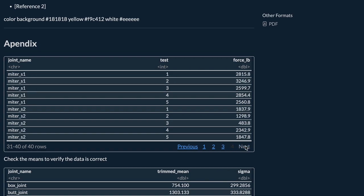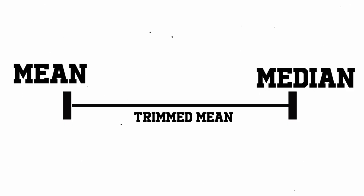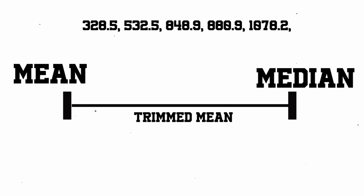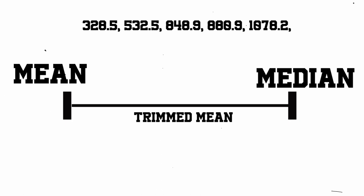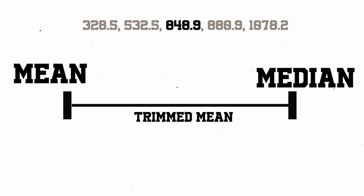A median is a trimmed mean when 50% of the data is trimmed — 50% over, 50% under — leaving you with just a single point: the median. You can think of it as a spectrum where the mean is on one end with no trimming, and the median is on the other. The trimmed mean is somewhere in the middle, and you can control how much trimming you apply. If I had to choose between a mean, a median, or a trimmed mean, I would definitely pick the trimmed mean in this application.